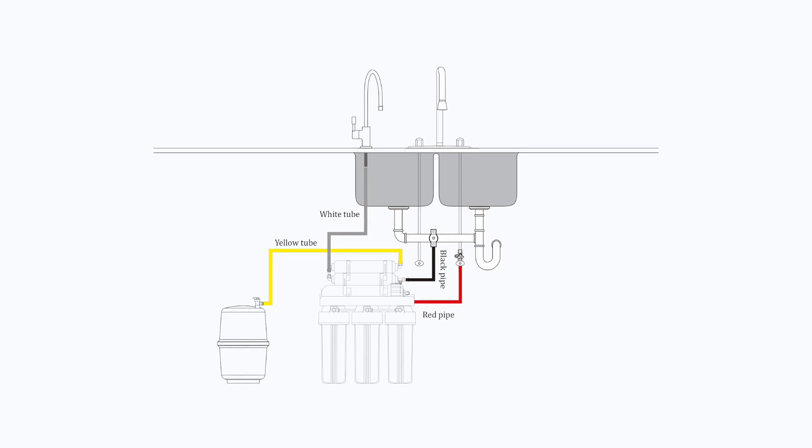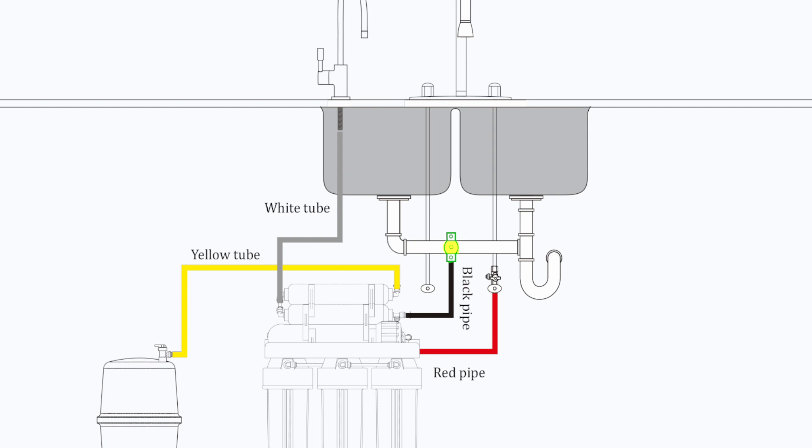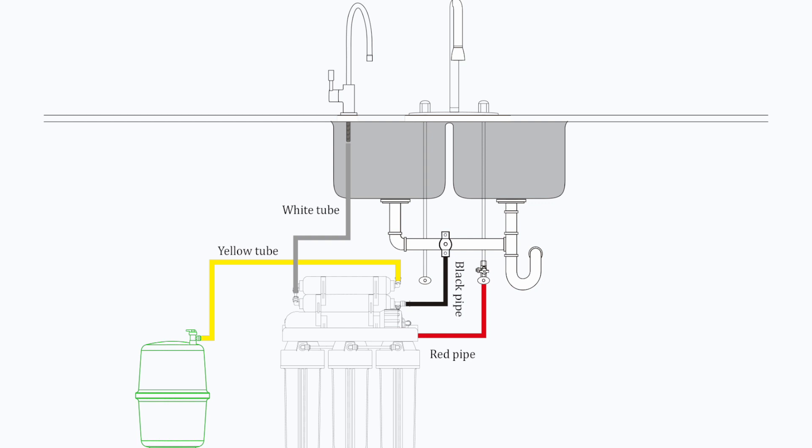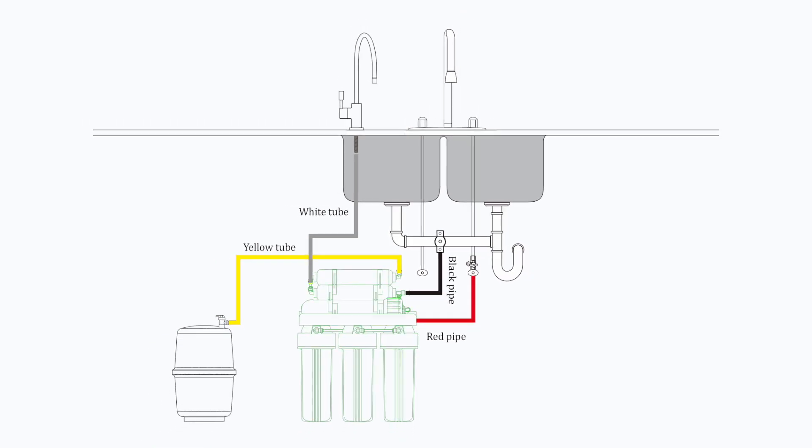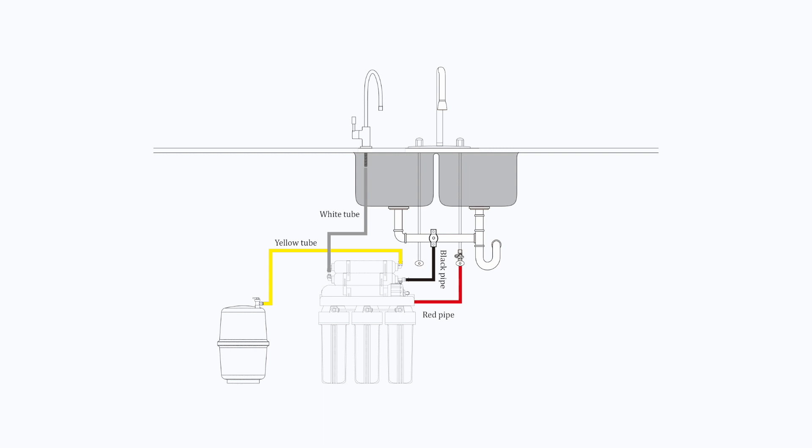First, we are going to talk about Quick Connect Plumbing Fitting. Then, we will help you prepare your RO faucet, wastewater saddle valve, feed water adapter valve, and water pressure tank. After placing the RO membrane and filter cartridges in their housing correctly, you are ready to connect the system.